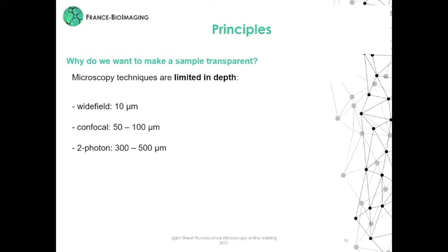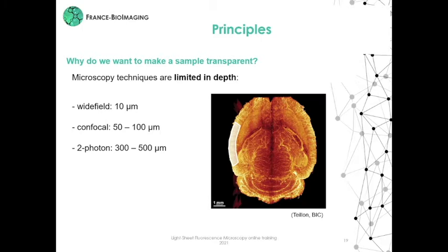With conventional techniques, we have access only to a small area as shown on this coronal section, while with light-sheet microscopy we can access the entire brain.